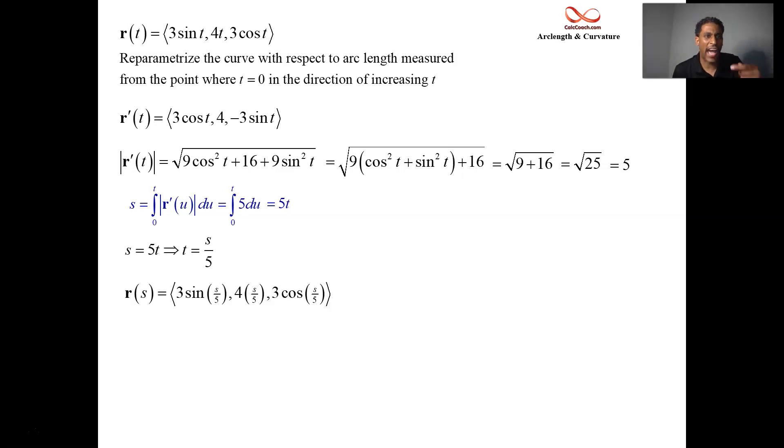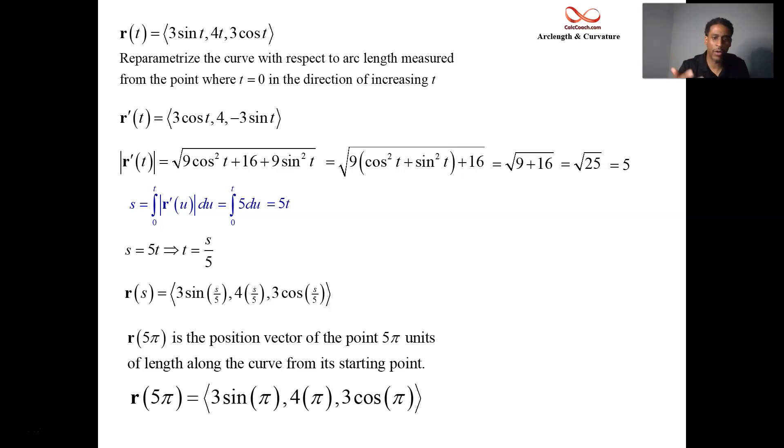When I've traveled five pi as a distance, I can figure out where I'm at. R of five pi, not T, distance five pi. I have my starting point T equals zero. I travel along the road five pi units. I know where I am at by plugging in five pi. The fives cancel out, three sine pi, four pi, three cosine pi, and we end up with zero, four pi, and negative three. That's where you're at after traveling five pi units.